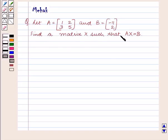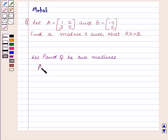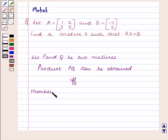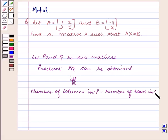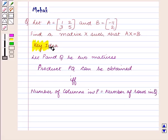Find a matrix X such that AX is equal to B. Let P and Q be two matrices, then the product PQ can be obtained if and only if the number of columns in P is equal to the number of rows in Q. With this key idea let us proceed with the solution.